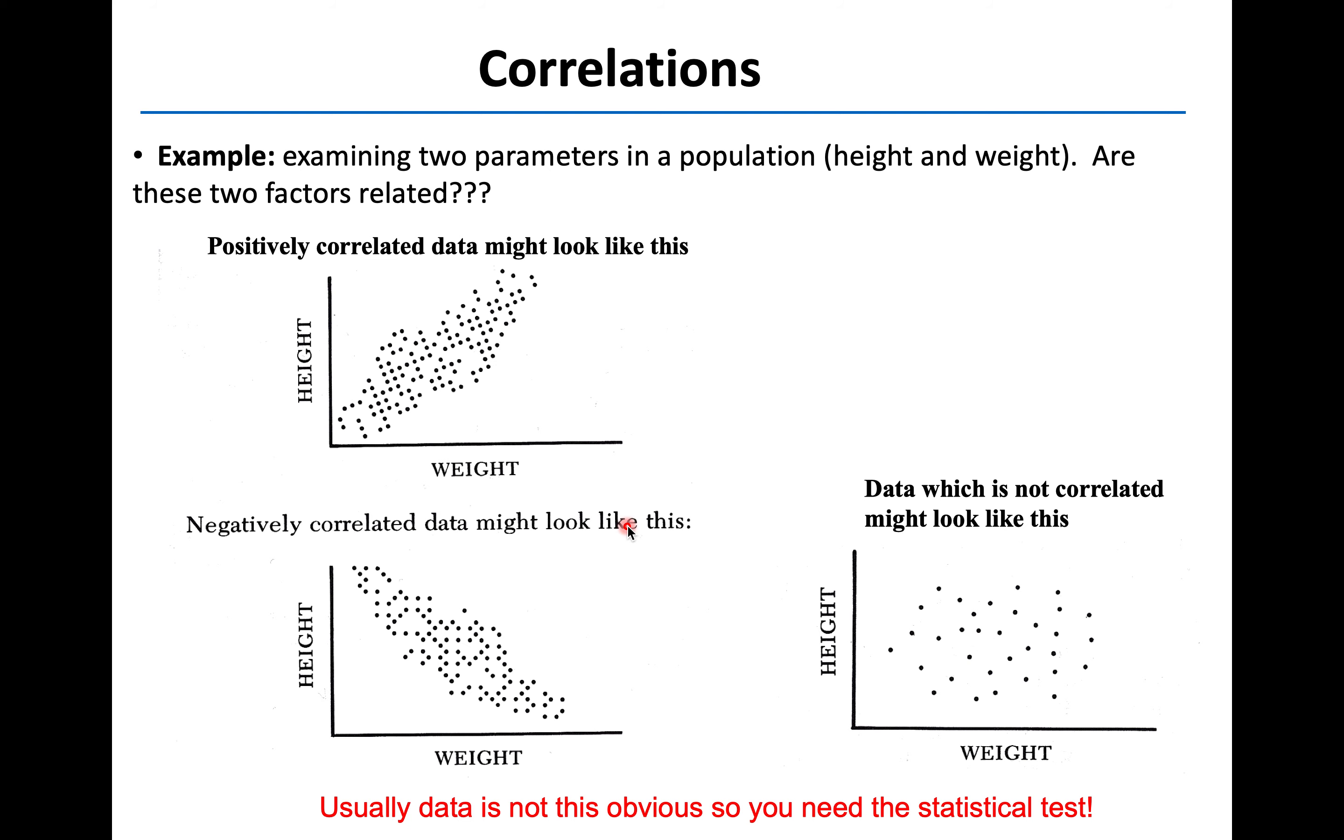It's going to be pretty rare that you're going to get some super obvious positive or negative correlation. Typically, your data is probably going to fall somewhere in between one of the two graphs on the left and the graph on the right. So it's like, I think maybe there's a positive trend here, but I'm not totally sure. And so we would need to use some statistical analysis to try to clarify. Are these two factors related or not? And if so, how are they related?